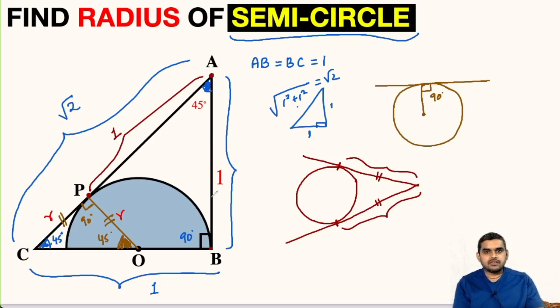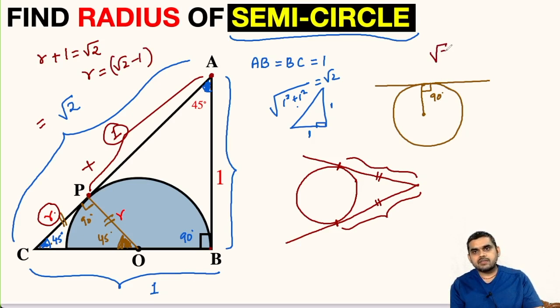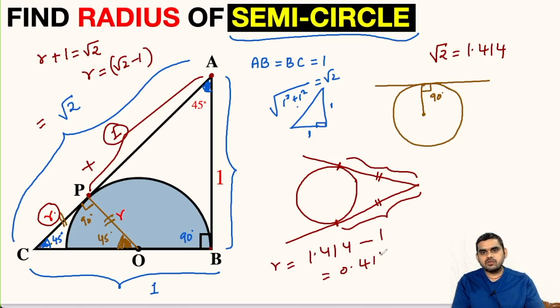Now it's very easy to find the radius because R plus 1 is equal to root 2. So radius will be root 2 minus 1 units. If you want, you can express root 2 as 1.414. So radius will be equal to 1.414 minus 1, that is 0.414 units.